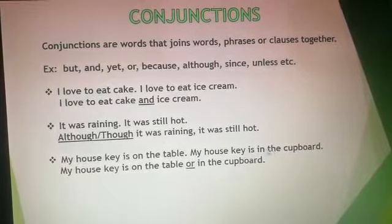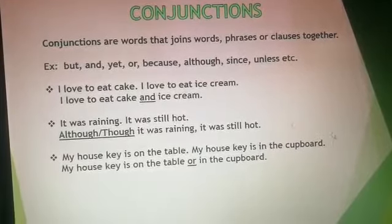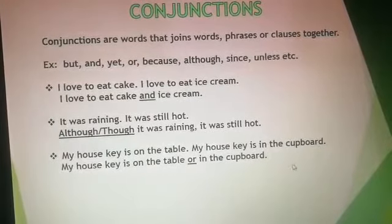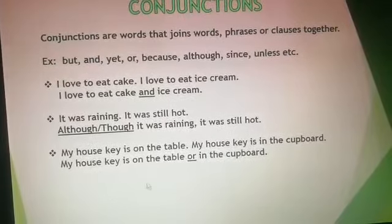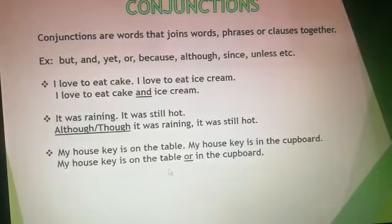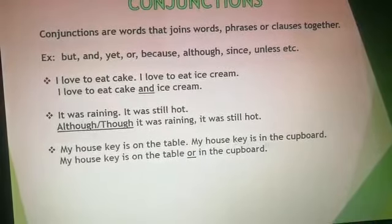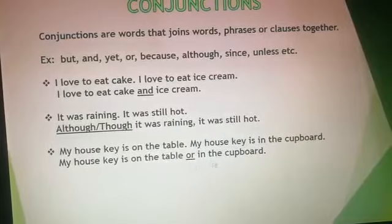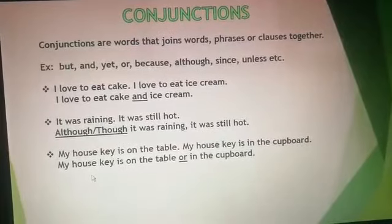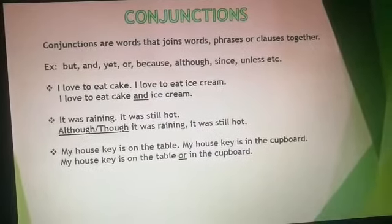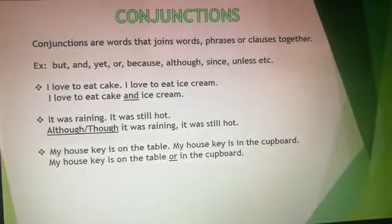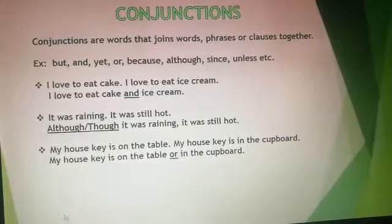Third example: 'My house key is on the table.' and 'My house key is in the cupboard.' Joined: 'My house key is on the table or in the cupboard.' In this sentence, the two phrases 'on the table' and 'in the cupboard' are joined using the conjunction 'or'. Hence, it is clear that conjunctions can be used to link words, phrases, or clauses.